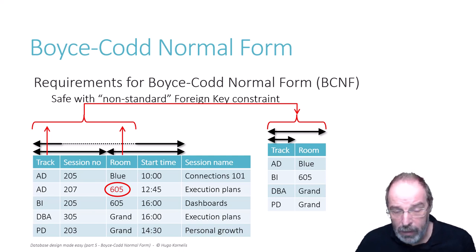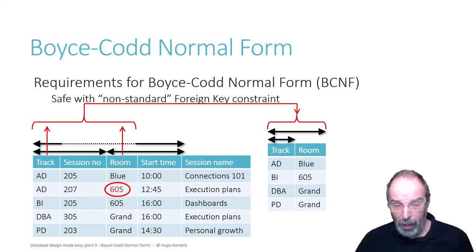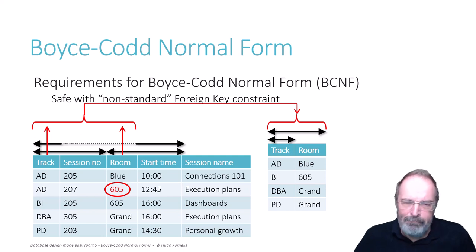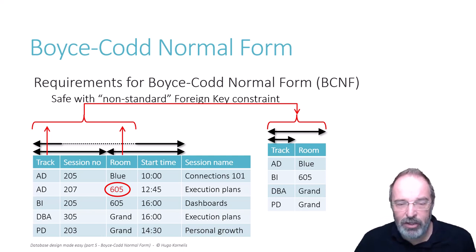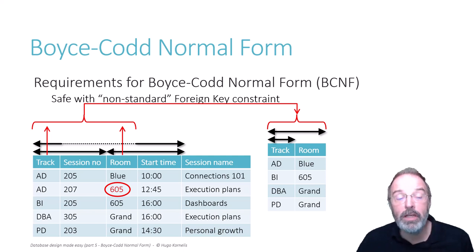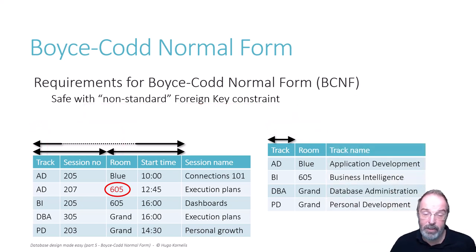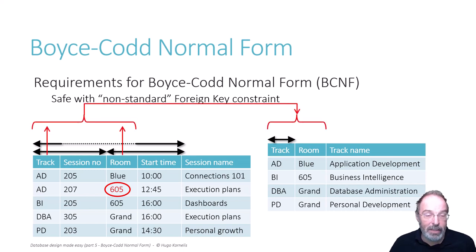But all databases allow you to create a redundant extra key on track and room, and now you can create this foreign key. While this introduces a new BCNF violation — you can see it in the right-hand side table, where the short key already implies that room is dependent on track, but track is now part of a key which BCNF does not allow — I try to put my conscience at ease by calling this extra key a technical solution for a problem and not a real key. We can close our eyes, hold our nose and pretend it's not a BCNF violation. Technically it is, but at least we prevent the change of reassigning AD207 to the wrong room.